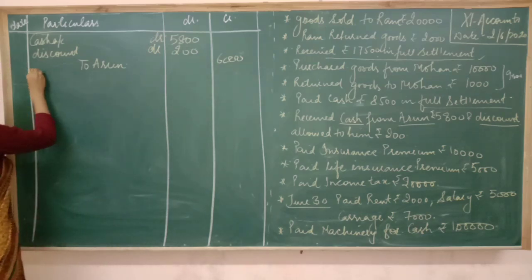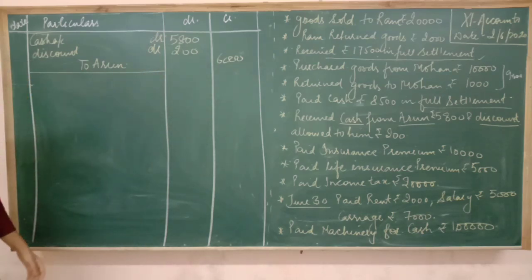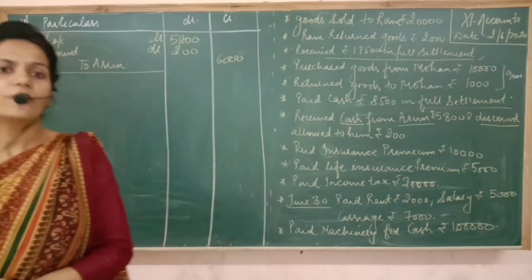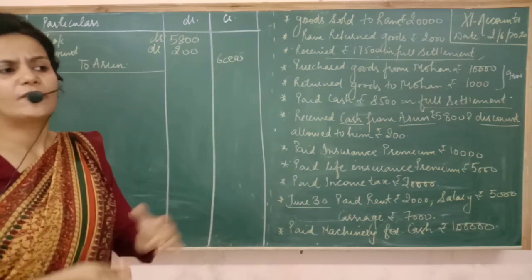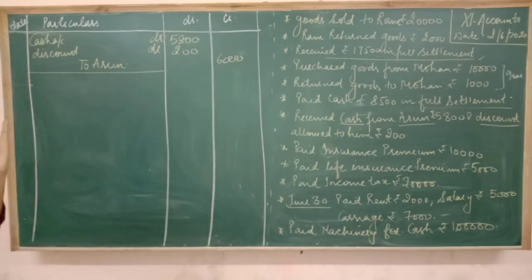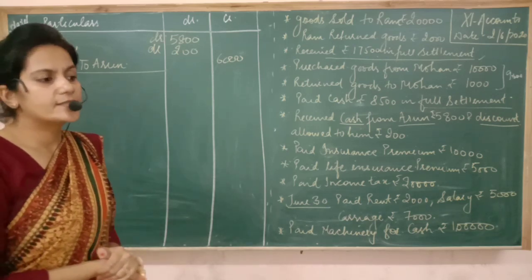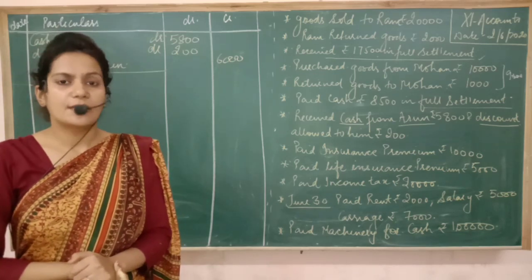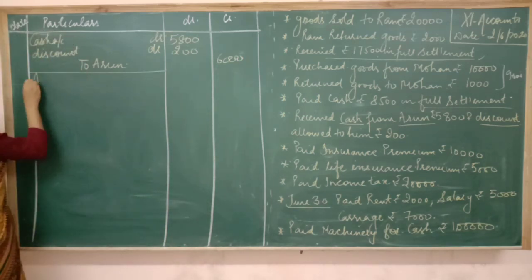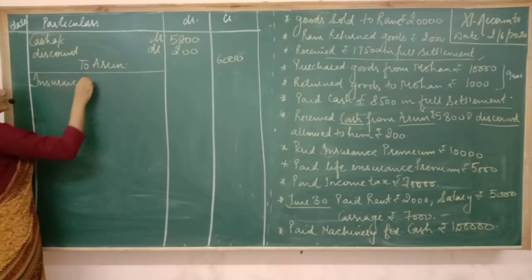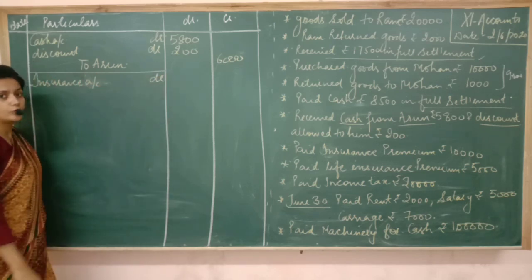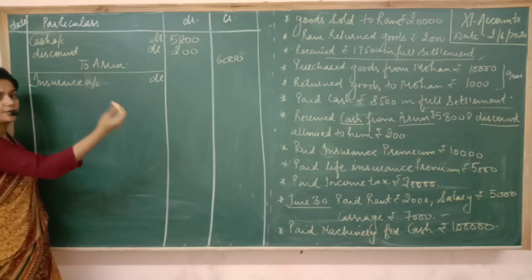Next transaction: paid insurance premium of 10,000. You are paying insurance premium, so it is an expense for you. Whether you pay rent, wages, salary, or anything else, everything is going to be an expense for you, and expenses fall under nominal accounts. The rule says debit the expenses, credit the income. So debit insurance premium account. And since cash goes out of the business, credit what goes out — credit cash account.